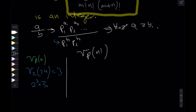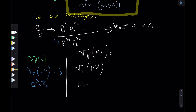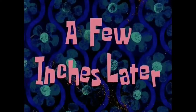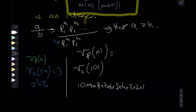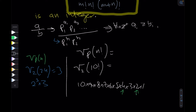Let's shift focus to factorials. For any prime p, what is v_p(n!)? Take something concrete like v_2(10!). 10! = 10 × 9 × 8 × 7 × ... × 1, and we ask: what is the power of 2? There is one multiple of 2, another, and so on — so there are floor(10/2) multiples of 2. If it were 11!, we'd round down 11/2 = 5.5 to get 5 multiples of 2.